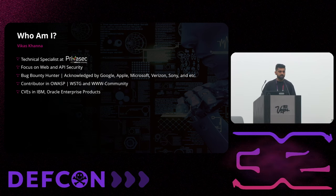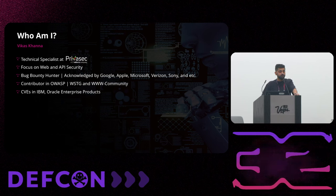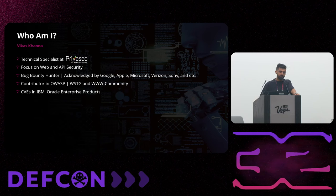A little bit about myself. My name is Vikas Khanna. I am a technical specialist at Privasec. My key focus is on AppSec, web applications, and API security. Whenever I'm not working on professional stuff, I am active in bug bounty hunting. I got acknowledgements from companies like Google, Microsoft, Apple, and many more. I have contributed to the community — OWASP WSTG and OWASP WW community. I also have a few CVEs from Oracle and IBM for reporting issues in their enterprise products.